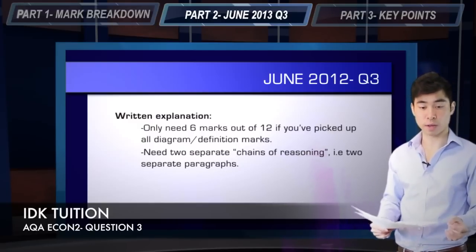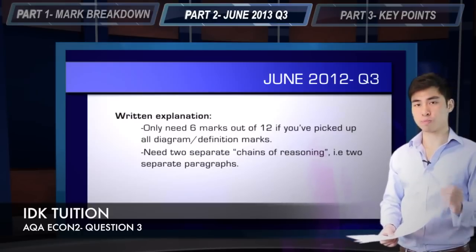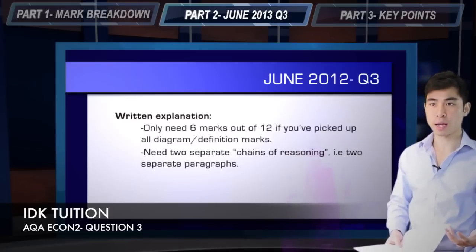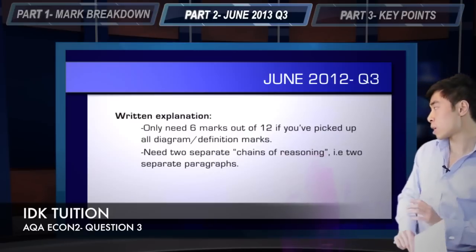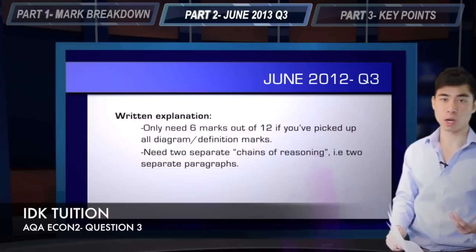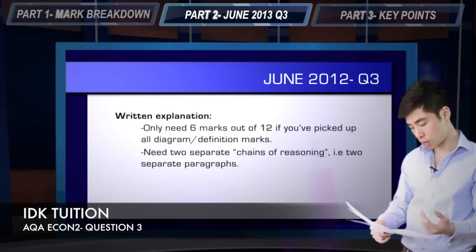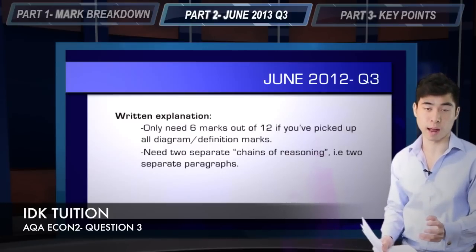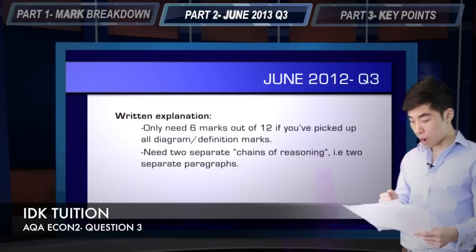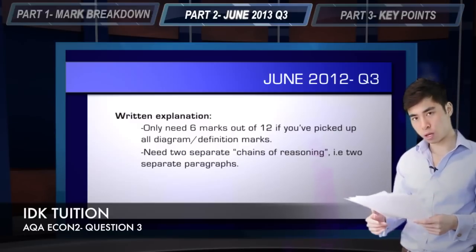If the question specifically asks about two factors, a good example might be: explain two factors which tie the exchange rate to the rate of inflation. It's quite easy here — you can pick out two separate points. Talk about the aggregate demand argument: if the exchange rate rises or falls, this will affect aggregate demand and in turn affect inflation. Then for the second point, talk about the direct effect on import prices of a fluctuating exchange rate.